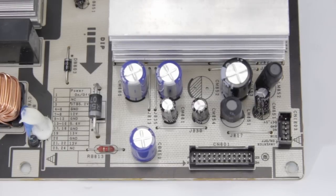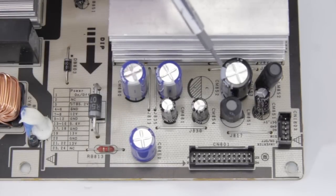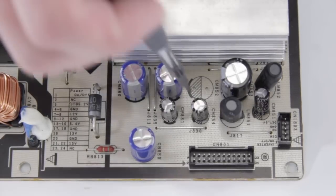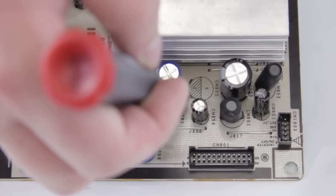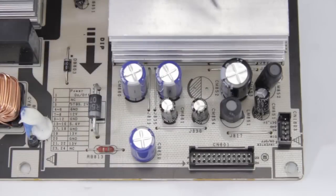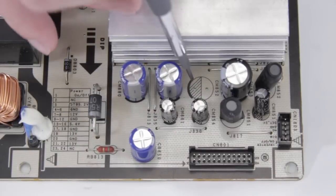So when you go to put in your replacement caps, you have to make sure that you line up the negative band with the markings on the board. They'll have like a hash mark and then the thicker border on one side. Make sure you line up that with that line.